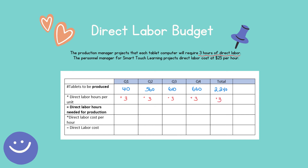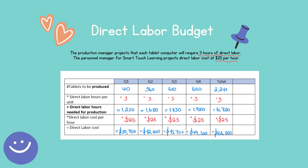Now I have the number of hours needed for production. I need to multiply that by the cost per hour to get total direct labor cost. The personnel manager for Smart Touch Learning projects direct labor costs at $25 per hour, so I multiply the number of hours by $25.